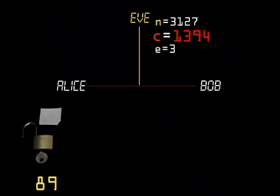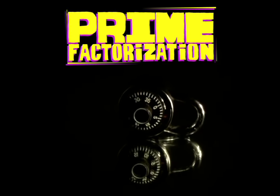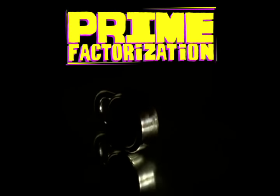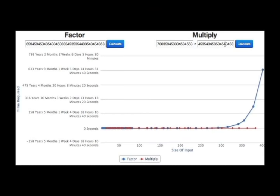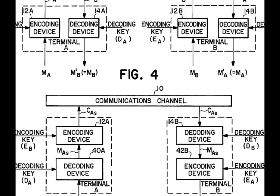Notice that Eve, or anyone else with C, n, and e, can only find the exponent d if they can calculate phi n, which requires that they know the prime factorization of n. If n is large enough, Alice can be sure that this will take hundreds of years even with the most powerful network of computers.